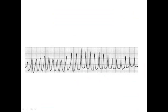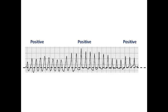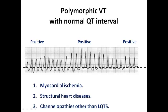In this ECG we can see it is not monomorphic because we have more than one morphology — at least three or four complex morphologies. If we draw an imaginary line to represent the baseline, we can see that all complexes show a positive axis in this ECG strip. So this patient most probably has polymorphic VT with normal QT interval if we check his resting ECG.